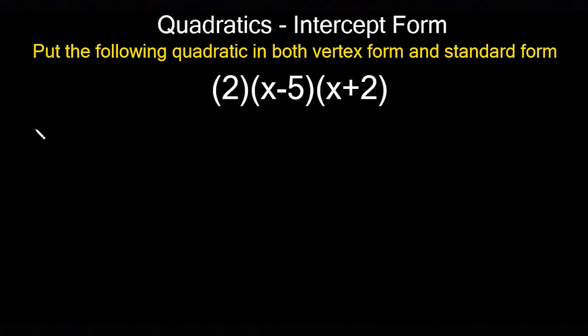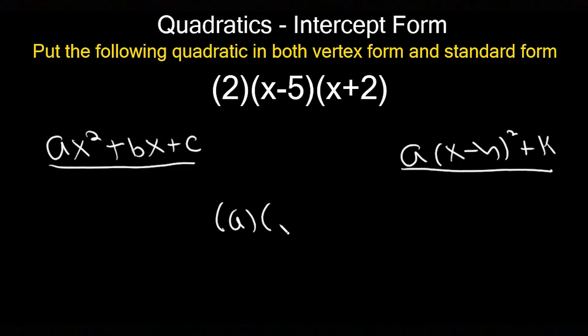In standard form, you have ax² + bx + c. They also want it in vertex form, which is a(x - h)² + k. The form they give it to you in is intercept form, and the template for that is a(x - p)(x - q).